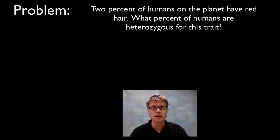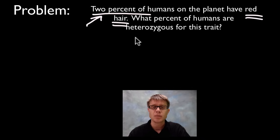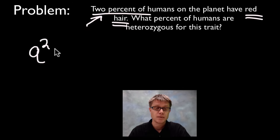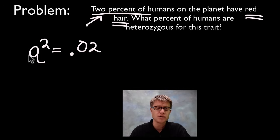Let's work a problem. 2% of humans on the planet have red hair. What percent are heterozygous for this trait? First, figure out what the question is giving us. They're telling us 2% of humans have red hair — that's a phenotype. But since red hair is a recessive trait, they're also telling us the genotype, which means Q² equals 0.02.